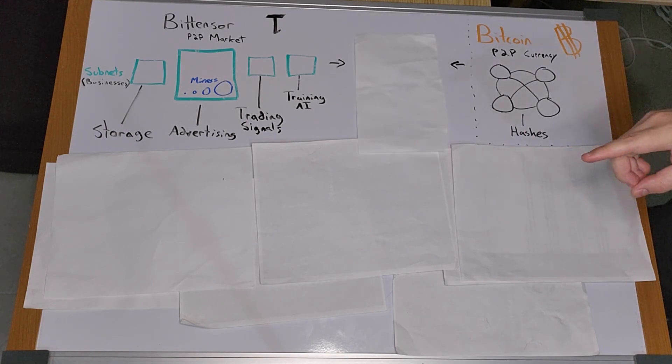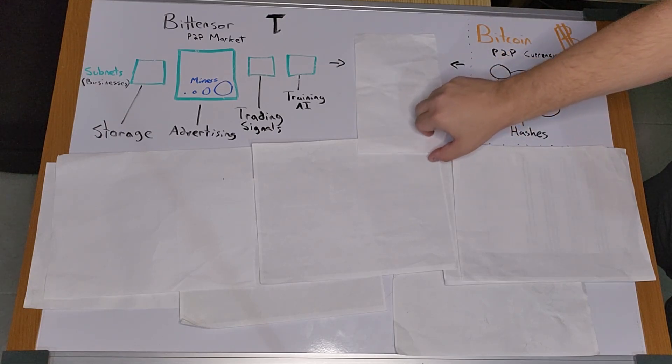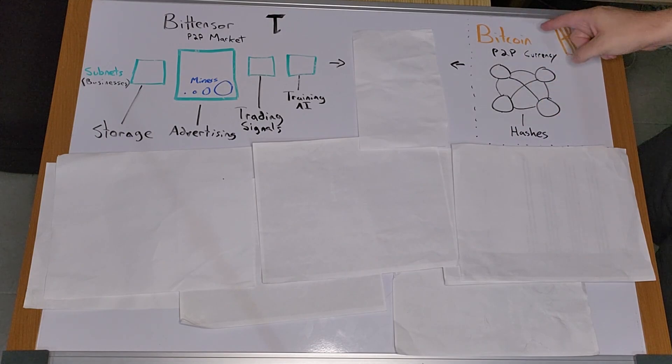Now, I know what you're thinking. This is just another shitcoin that is overpromising and surely has some stupid infinite supply tokenomics, or VC allocation, or other BS. No, it has the same tokenomics as Bitcoin. The founders have a lot of respect for Bitcoin.